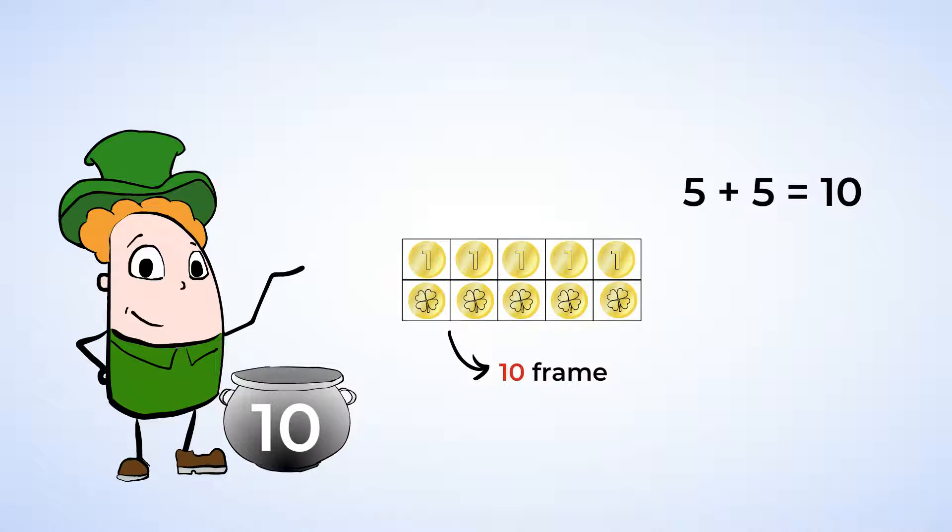But I wonder, is there another way to make ten? What if we start with six gold coins instead? How many boxes do we need to fill to make ten? One, two, three, four. Now we know that six plus four are also magic friends of ten. And we can write that down, too.